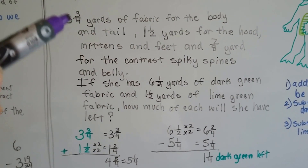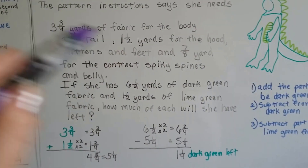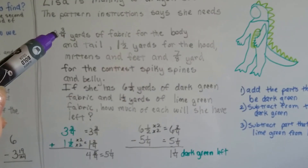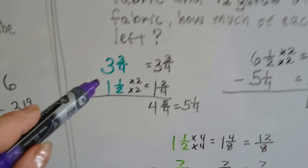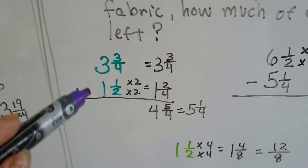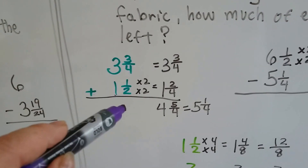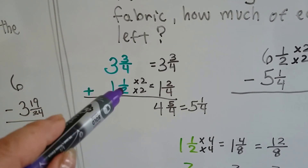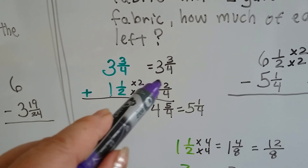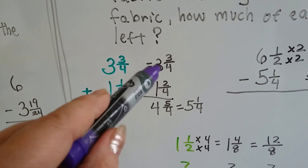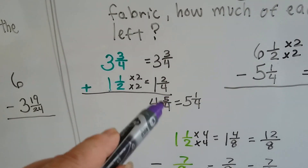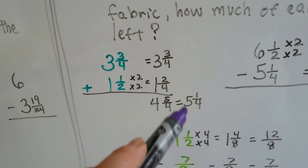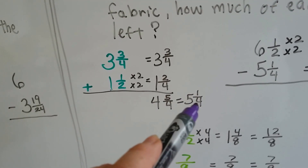We need to add the dark green parts together — three and three-fourths yards for the body and tail, and one and a half for the hood, mittens, and feet. We have three and three-fourths plus one and a half. They need a common denominator, so they meet at four's house. Two times two is four, so one-half becomes two-fourths. We add three and three-fourths and one and two-fourths to get four and five-fourths. We pull four-fourths out and give it to the whole number, giving us five and one-fourth.